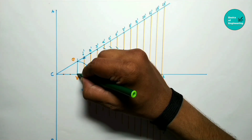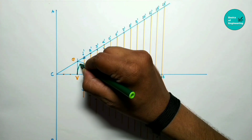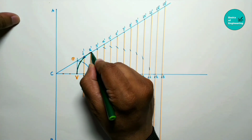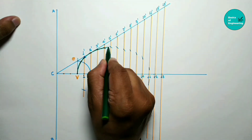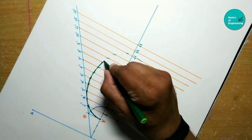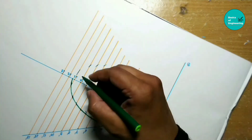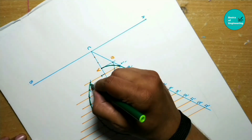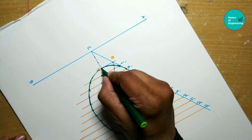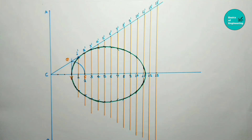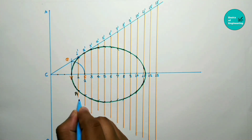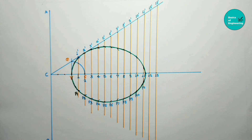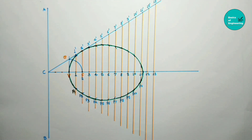Start to join these points step by step — the curve should be a smooth curve. Draw the curve from the vertex, then vertex to 1, 1 to 2, 2 to 3, 3 to 4, and continue through all points up to 11. Give names to all points: point number 1, point number 2, and so on. This is called the ellipse by the directrix and focus method.